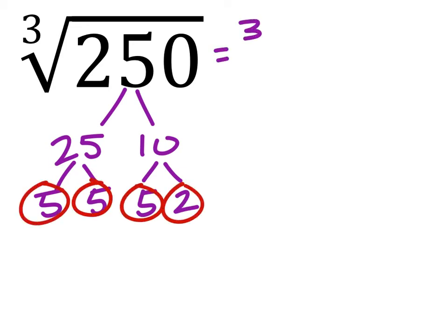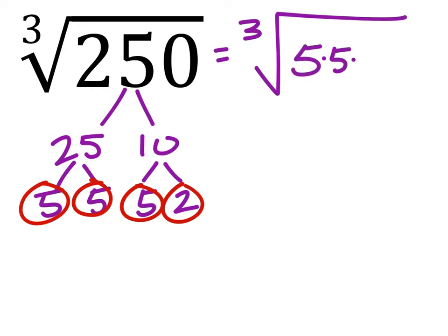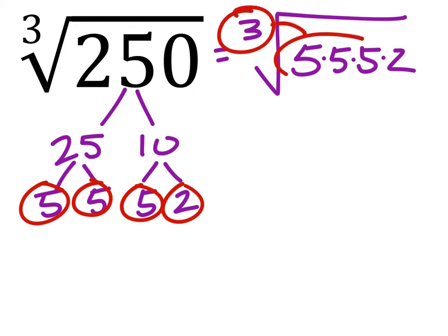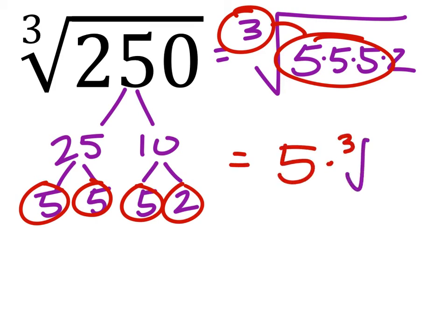Which gives us the cube root of 5 times 5 times 5 times 2. Now remember, we're looking for triples in these. There's a triple right here. So I'm going to pull that out of the cube root — 5 times the cube root of 2.